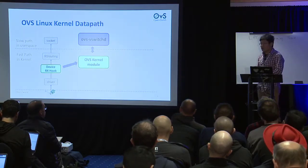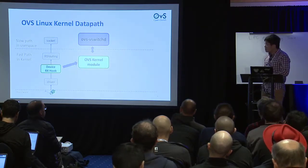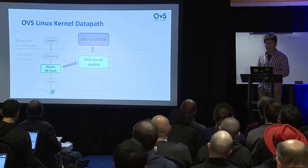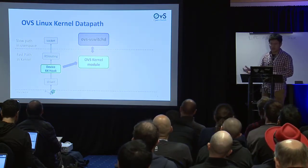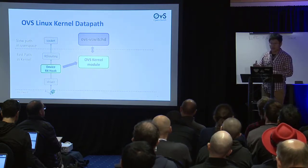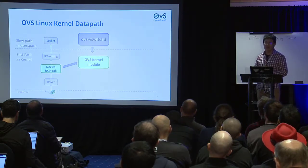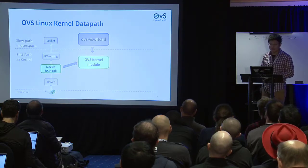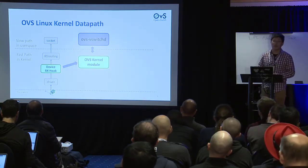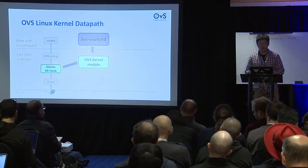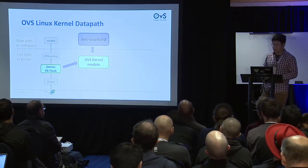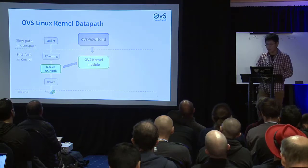The most common OVS deployment today uses a kernel module — OVS OpenVSwitch.ko inside the Linux kernel — and the OVS vSwitchD daemon running in user space. The kernel module registers a receive-packet hook point and then does the rest of the processing inside that kernel module.